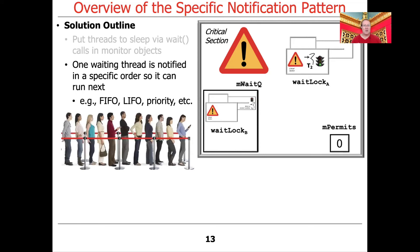One waiting thread will then be notified in a specific order. In our case, it's going to be in FIFO order. It could be other orders, but we're going to do it in FIFO order. That will indicate that the thread that's been waiting the longest is the one that gets to run next.